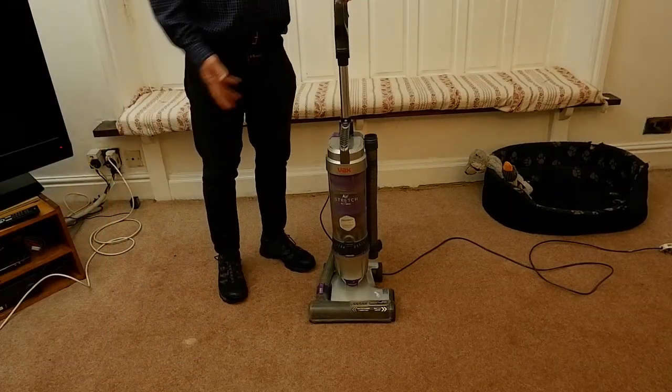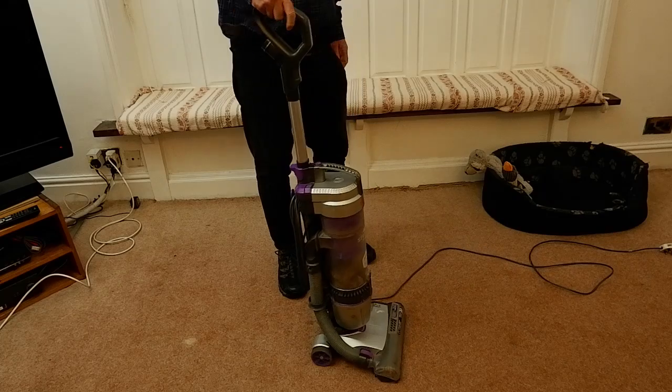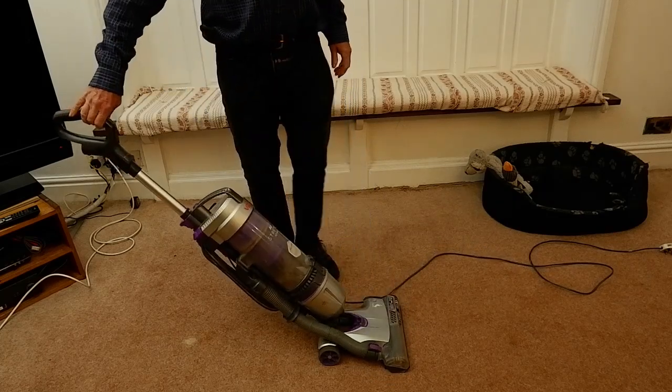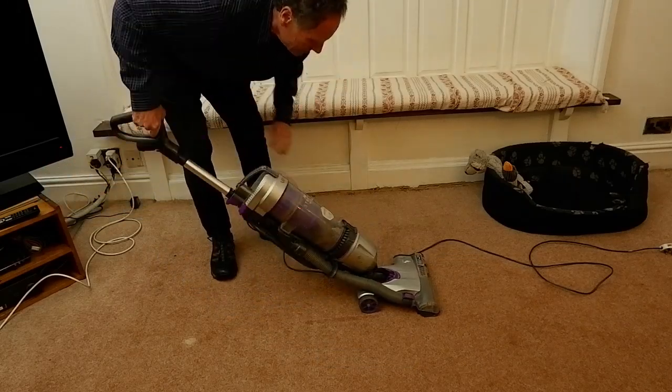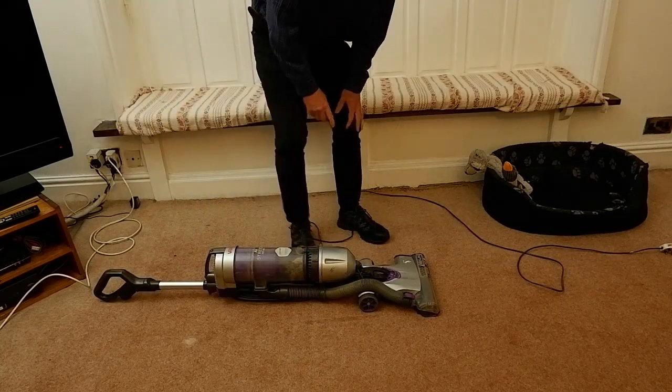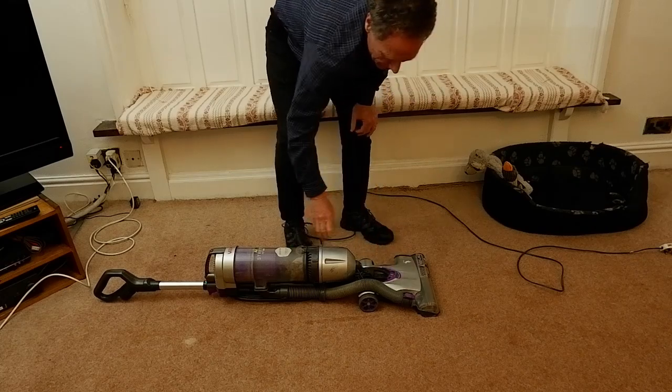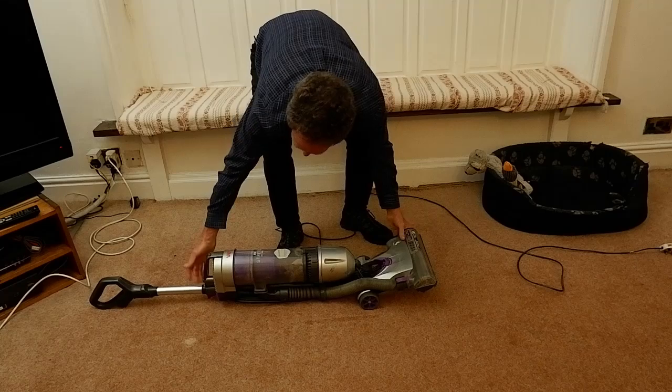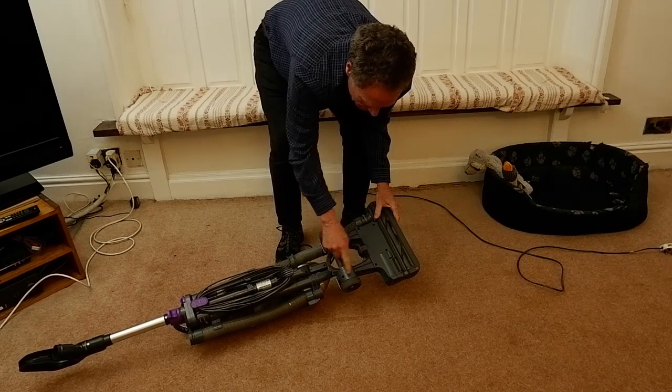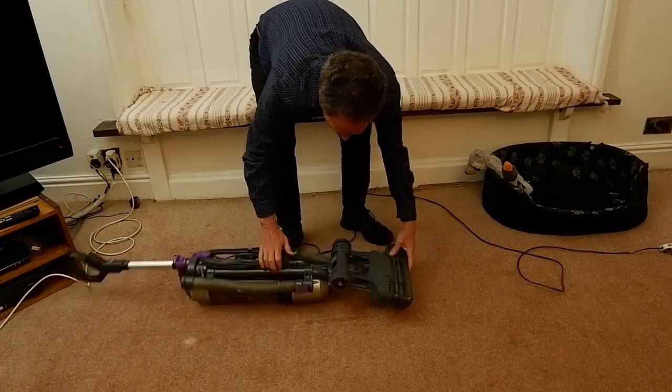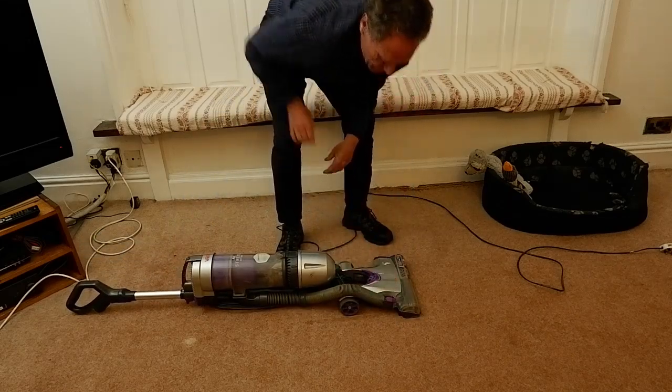So the first thing you're going to need to do is to take some of the panels off so you can get access to it. The thing to do is to lean the vacuum back, lay it flat on the floor. And we're going to need to get this layer off here, this piece of plastic off here. The way to do that is to turn it over and undo these six screws. Okay, those six screws. Turn it back again, and you'll be able to lever this plate off.